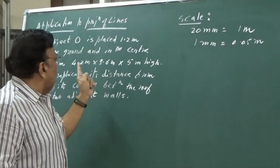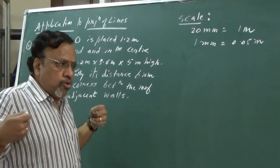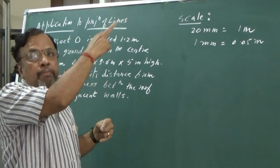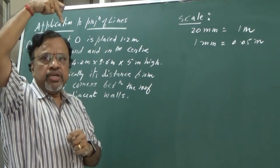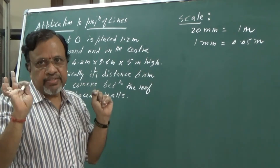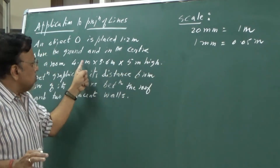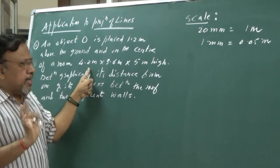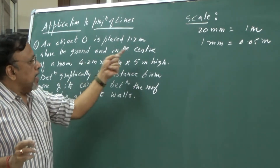Now since I want to draw the orthographic projection of the room, in a particular view I can see only two dimensions. If I look from the front, I will see the height and the breadth. In the top view, breadth is already known, so I get the other dimension which is the length. Since height is given as 5 meters, it will be seen in the front view. There is no hard and fast rule for which is length and which is breadth, only height must appear in the front view.